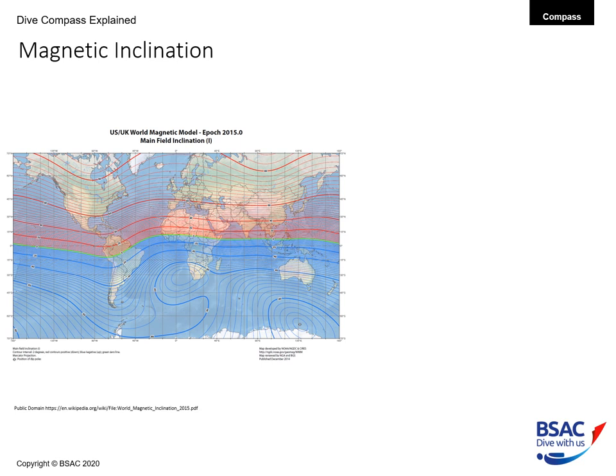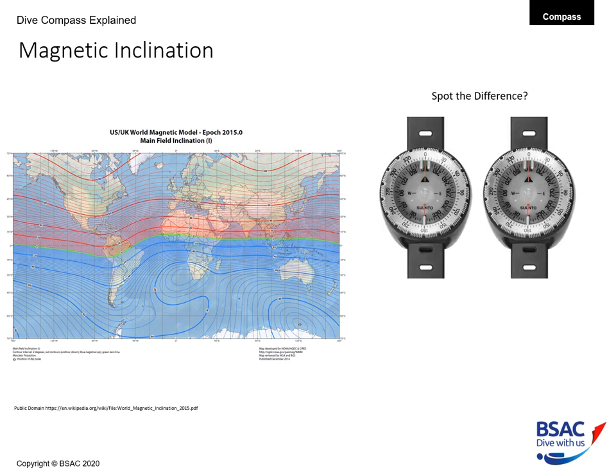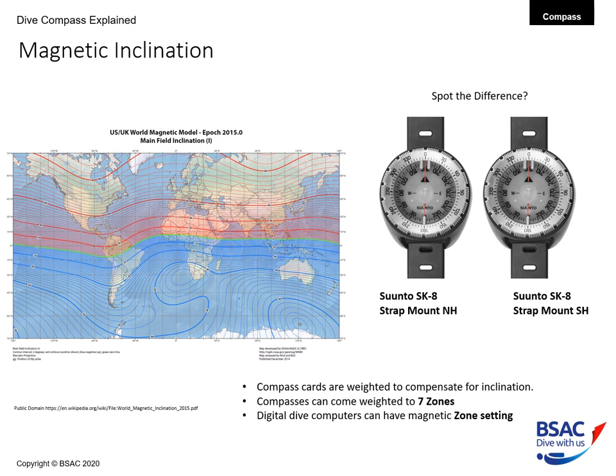What has that got to do with scuba diving? We have two compasses here that are pretty well identical except for the model numbers — a Santo SKH strap mount NH and a Santo SKH strap mount SH. This means one is designed for the northern hemisphere and one for the southern hemisphere. Compass cards are weighted to compensate for the Earth's inclination, and compasses can come weighted in up to seven zones. Digital dive computers with compasses can also have magnetic zone settings.